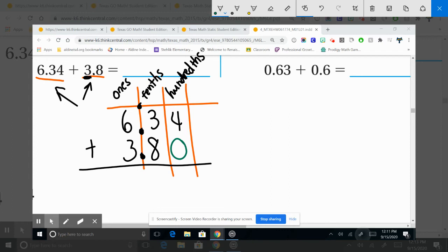Then it's simple. We add four plus zero is four. We add three, and then we have eight.